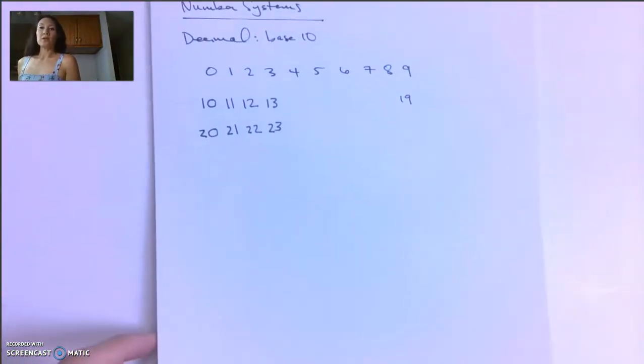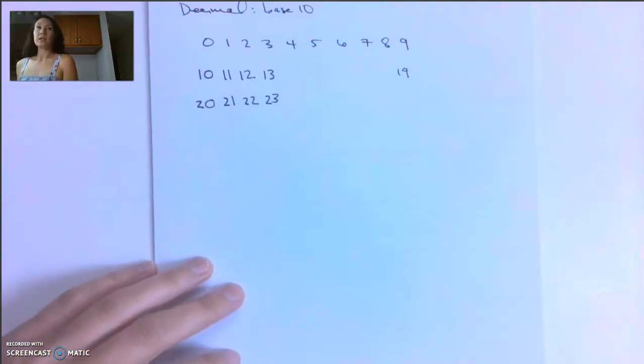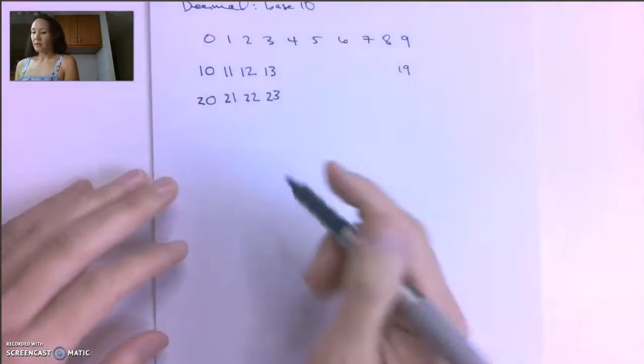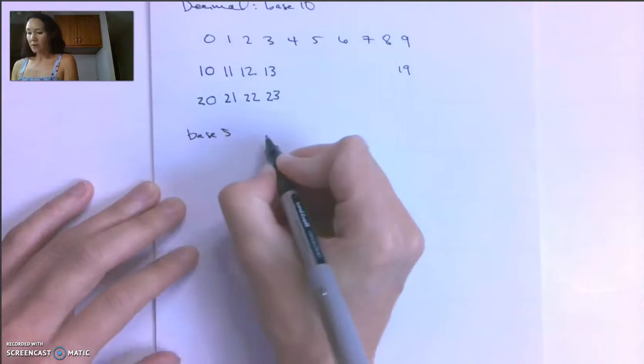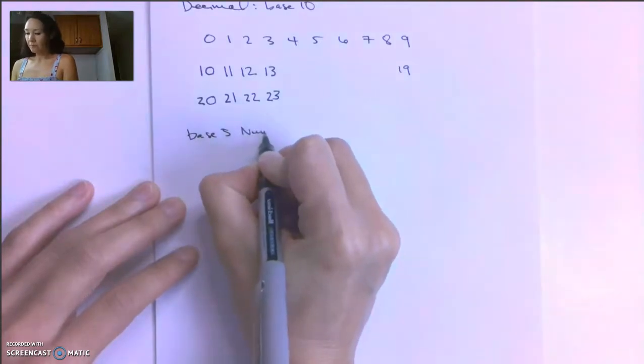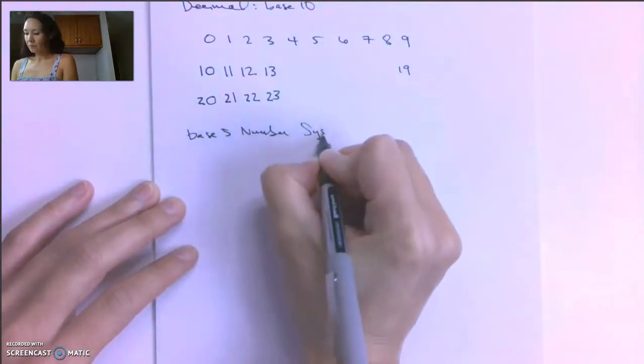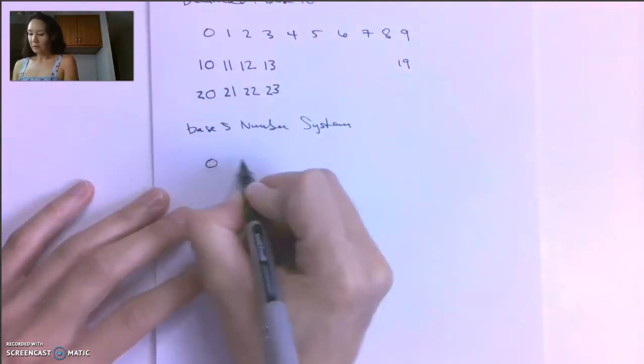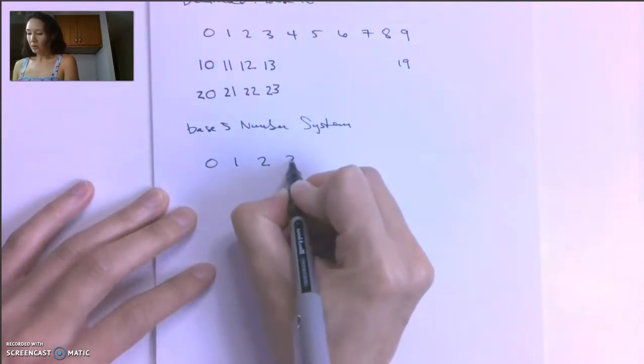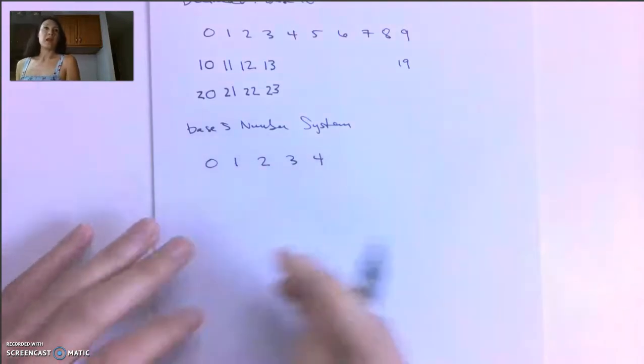So suppose that you lived in a culture that only used one hand to count instead of both hands. You would only have five unique digits. So let's look at how we would construct the base 5 number system. So in this case, our building blocks would be 0, 1, 2, 3, 4, and that would be it.